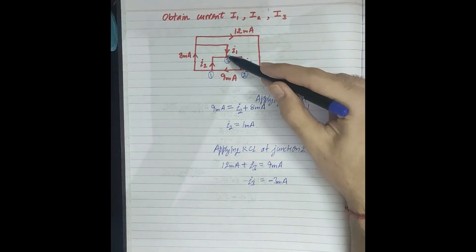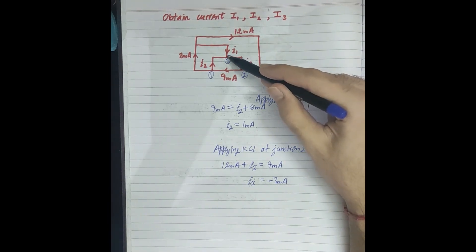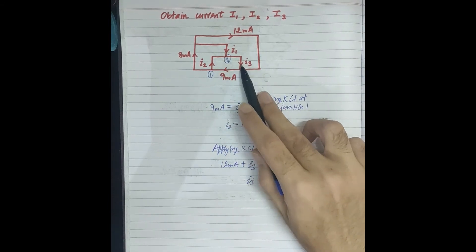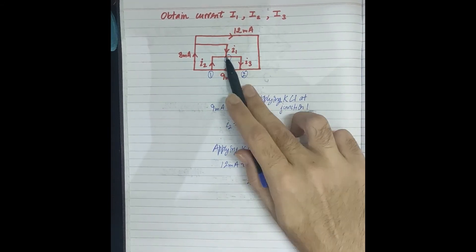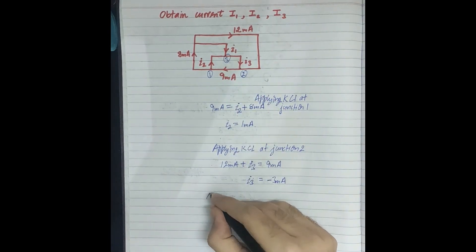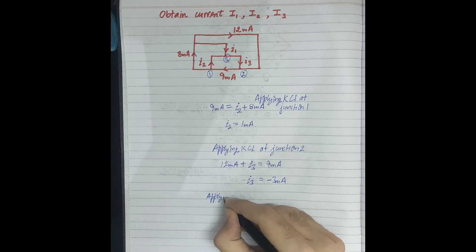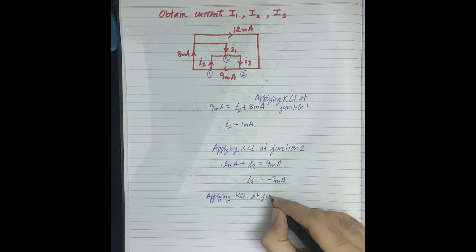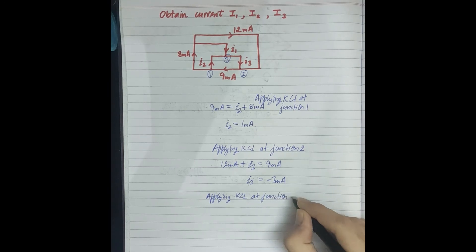Now we will calculate I1. Because we needed to know I2 and I3 values first, so we can calculate I1. Now apply KCL at junction 3.